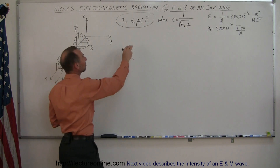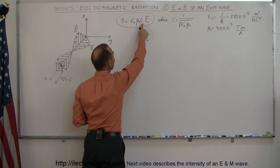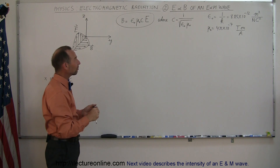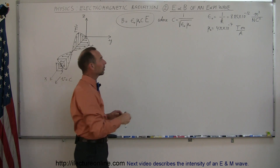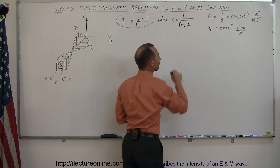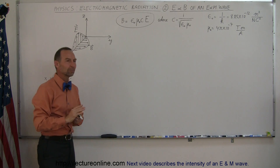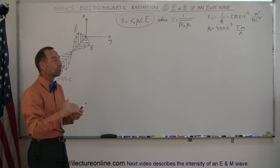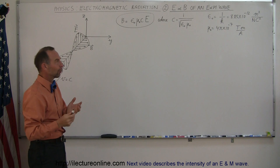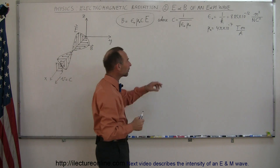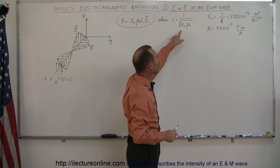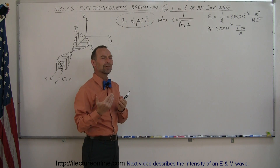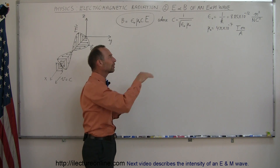We have three symbols here: epsilon sub-naught, mu sub-naught, and C. You already know that C is the speed of light. Epsilon sub-naught and mu sub-naught are two constants related to the properties of space. Space allows light to travel through it, but at limited speeds. These constants represent what we call the permittivity and the permeability of free space — having to do with the retardation of the wave traveling through space.